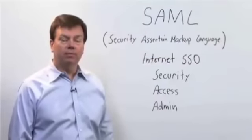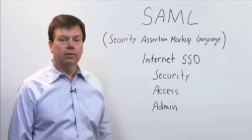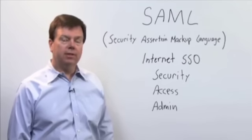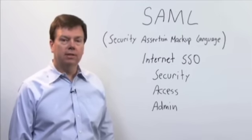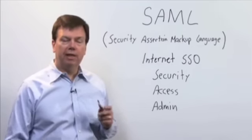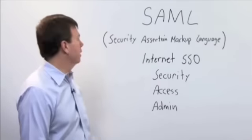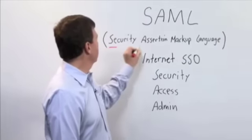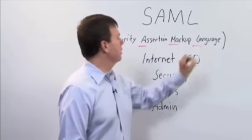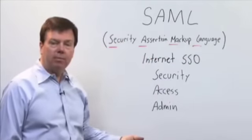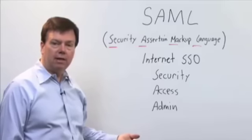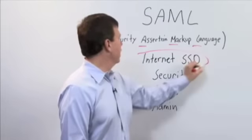Today we're here to talk about SAML, what it is, how it works, and why it's important. SAML is a secure XML-based communication mechanism for communicating identities between organizations. The name is actually an acronym from Security Assertion Markup Language, but the key thing about SAML is the primary use case it enables, which is Internet SSO.